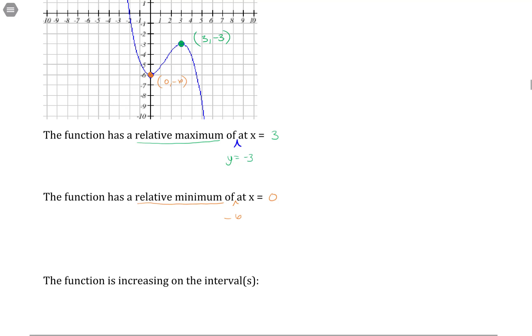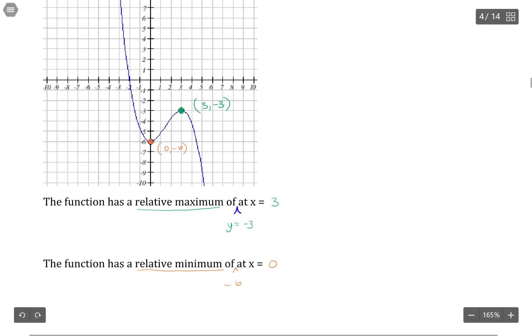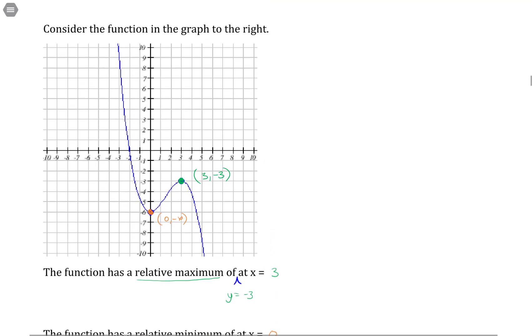So the function is increasing on the intervals what? So let's check where it's increasing. A function is increasing where it's going up in value. And we're always reading from left going to right. So going from left to right, this part of the graph is going down in the y value, so it's decreasing. So that's not what we're looking for.